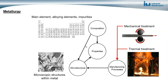Microstructure refers to microscopic structures present within the metal — this includes grains, phases, dislocations, and the arrangement of atoms. These are things we can't see with the naked eye; we need a microscope to see them. These microscopic structures have a huge impact on the properties of a metal, and we can alter those microscopic structures to alter the properties of a metal.